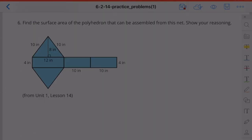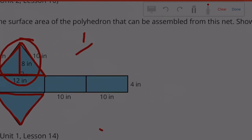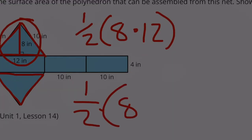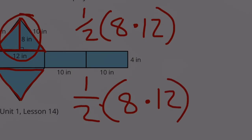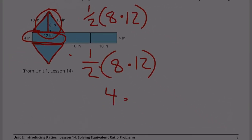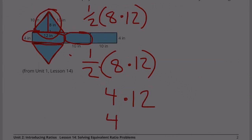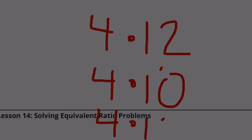Number six: find the surface area of the polyhedron that can be assembled from this net. There are two triangles that are 8 by 12, and since they're triangles it's half of 8 by 12 each. There's a rectangle that's 4 by 12, and two rectangles that are 4 by 10.